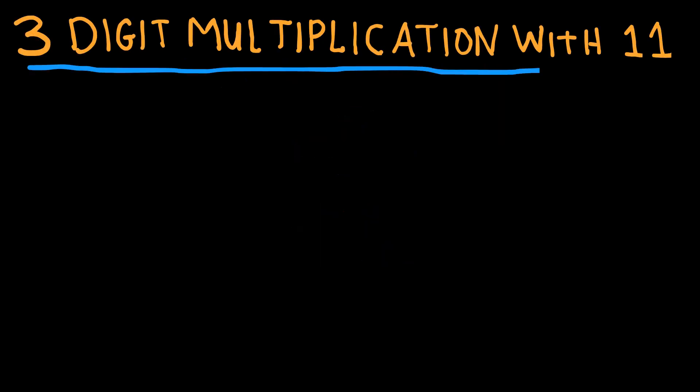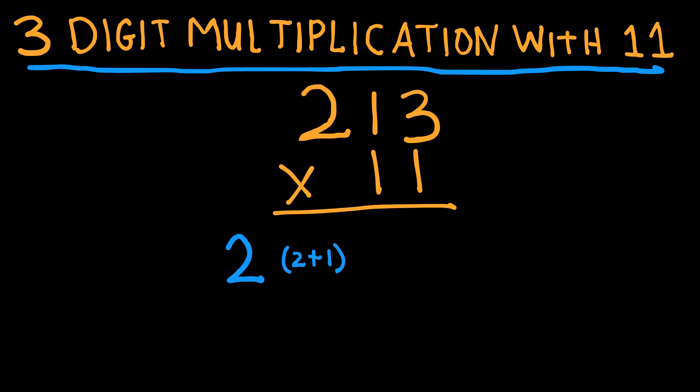This trick is one of my favorite tricks because it also works for 3-digit multiplication with 11. It's pretty similar to the two-digit multiplication with 11. Here we have the first example, 213 times 11. Let's keep the number 2, let's add 2 plus 1, that is 3. Now let's add 1 plus 3, 1 plus 3 is 4, and we keep the number 3. So our final answer is 2343.